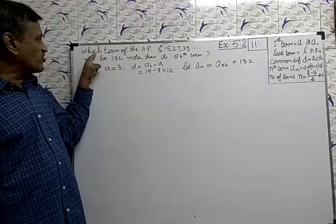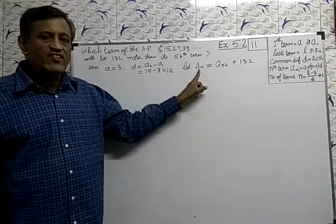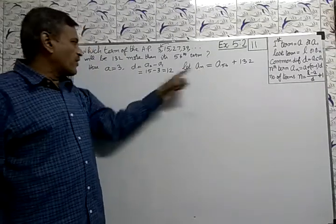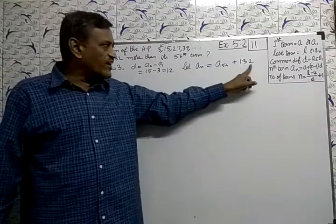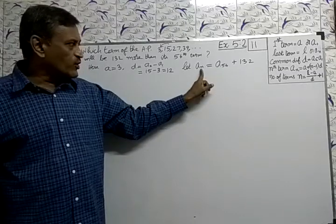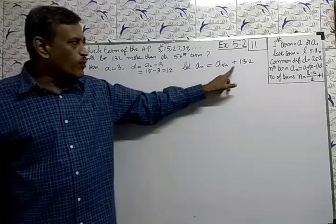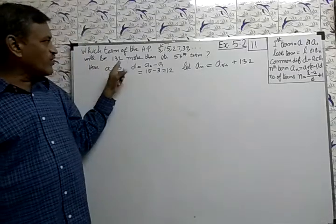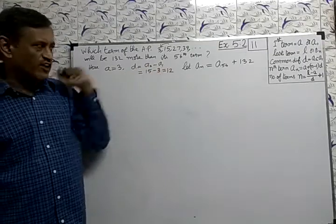Now see the question, which term? Let us take Nth term, AN. The Nth term is 132 more than 54th term. So AN equal to A54 plus 132, 132 more than its 54th term.